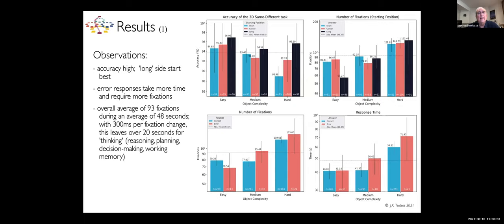Accuracy is very high. People can do this task even though those look difficult. Average accuracy is almost 94%. If you start on the long side where you see both objects directly in front of you, you're better at it. Error responses take more time and require more fixations. The average number of fixations is 93. The average length of a trial is 48 seconds. If you take 300 milliseconds per fixation change, that leaves you over 20 seconds for thinking. What are you thinking about?